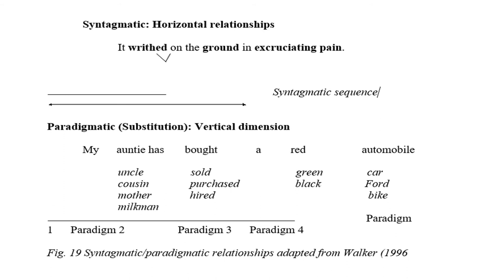Another diagram shows the syntagmatic or horizontal relationship: 'He writhes on the ground in excruciating pain.' So 'writhes' is the verb, 'on the ground' is the object or prepositional phrase, 'in excruciating pain' is the adjunct. We move from left to right.